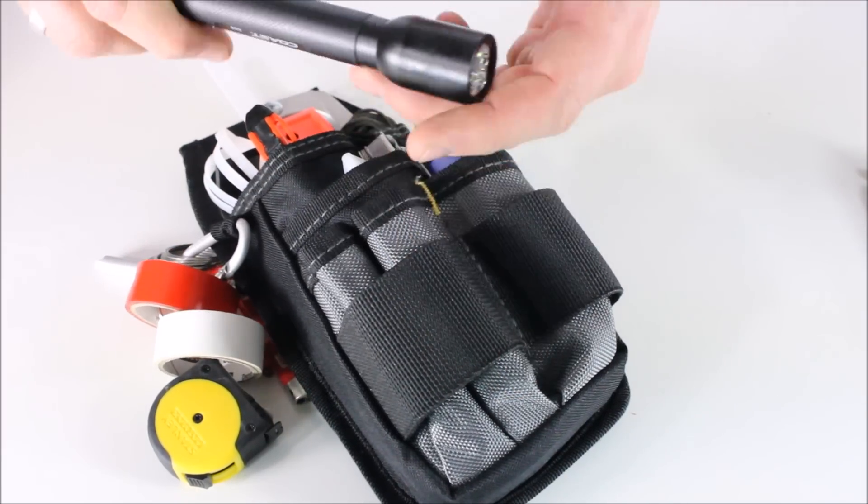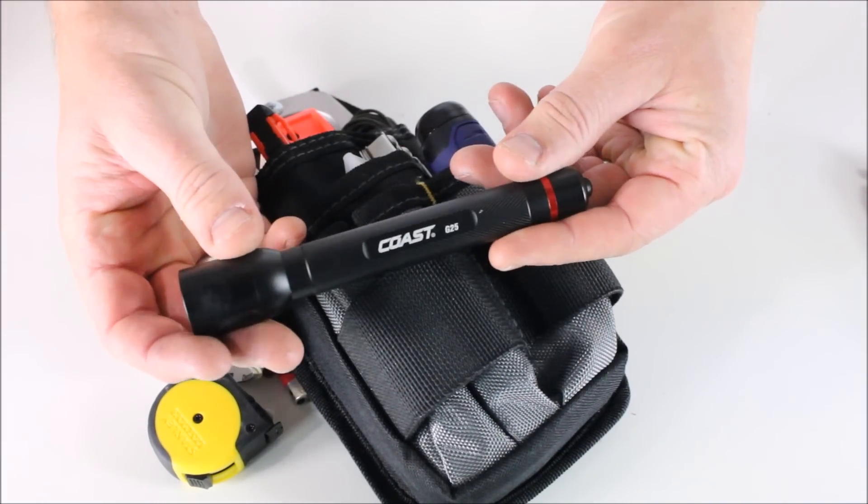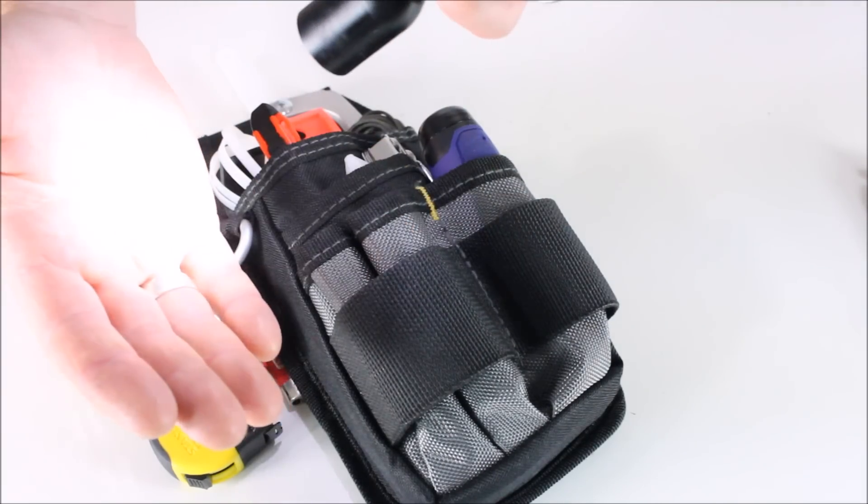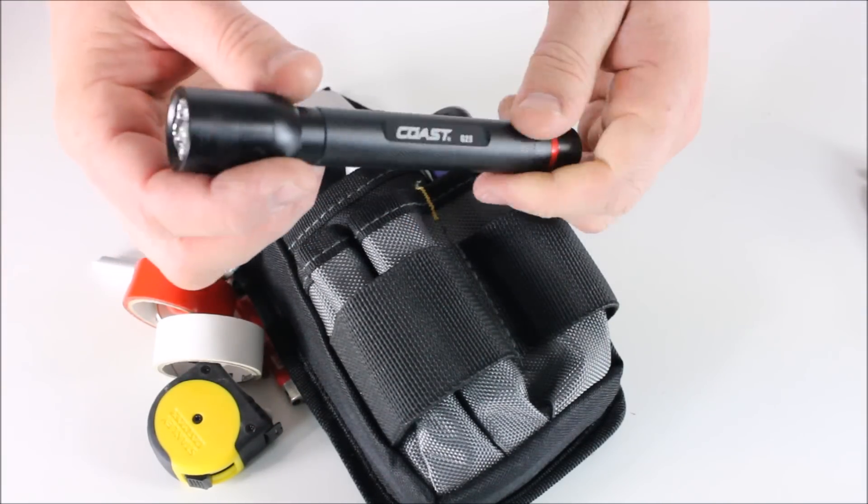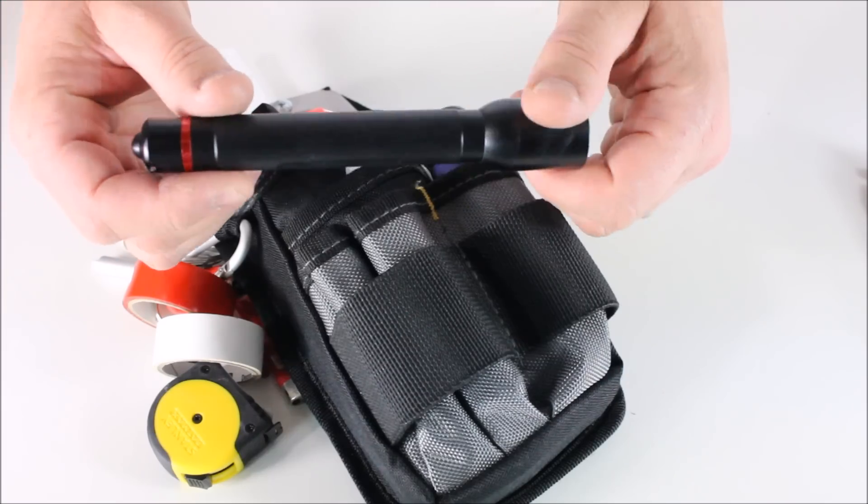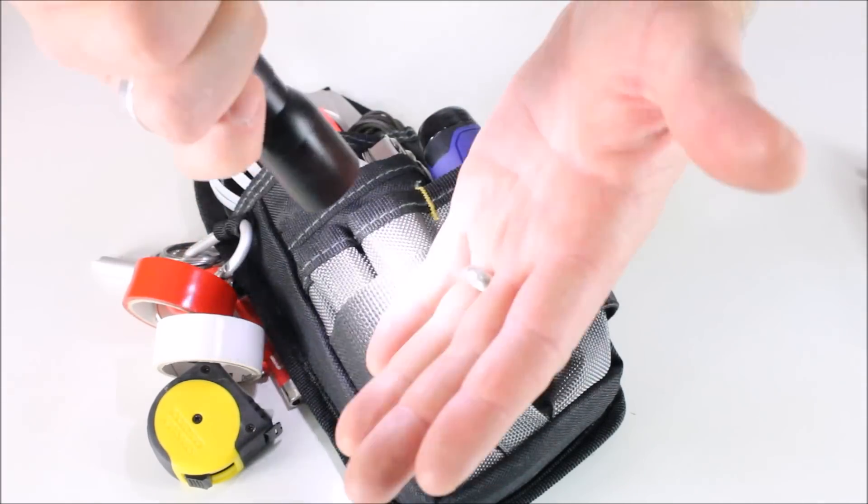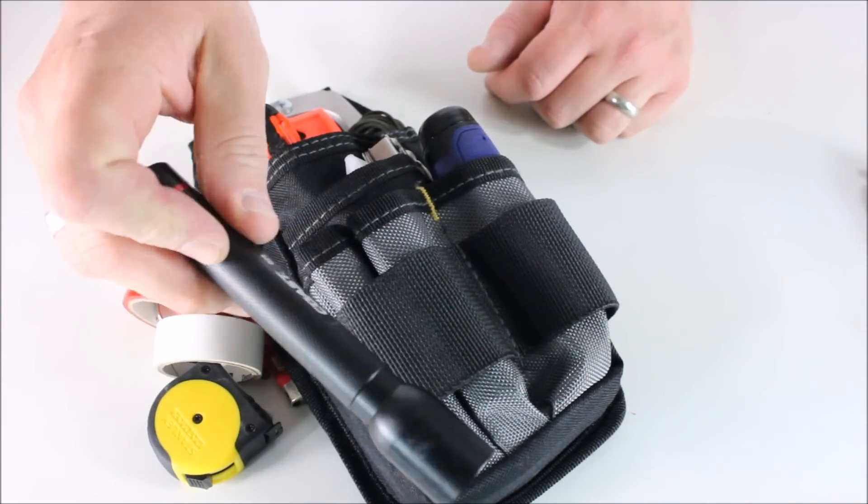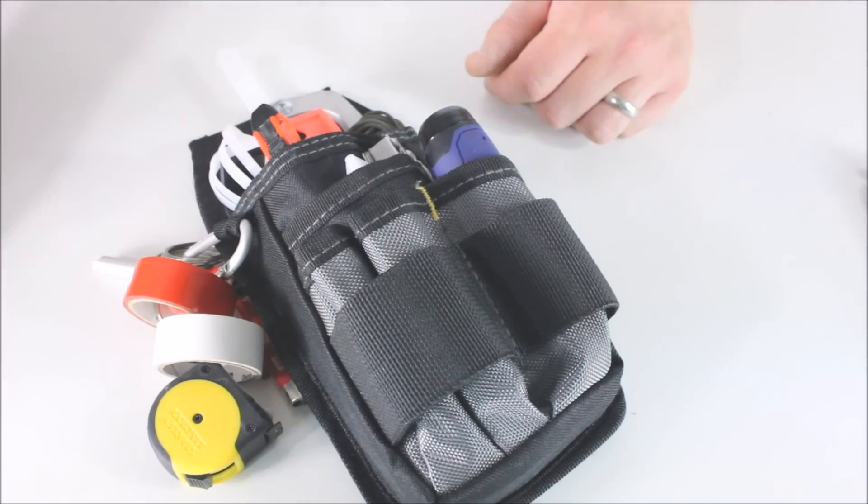We've got this little Coast Light. This is the G25 Coast Light and I honestly don't even remember where I picked this up, but it's not something you're going to be using to land airplanes. It's not a high power light, but a nice light. You know, get it, look into something, like I said, in your car or you drop something. That's definitely a very basic light to use and it fits nicely in there.